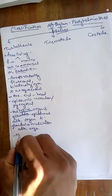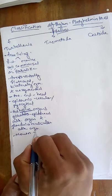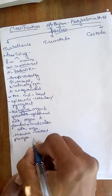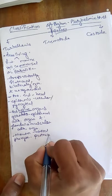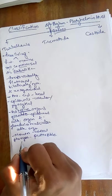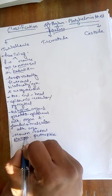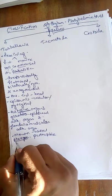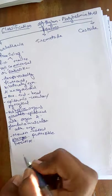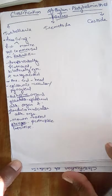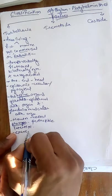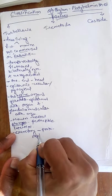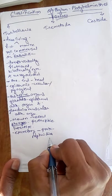The mouth is ventral in position and the pharynx is protrusible. The intestine is present and shows variation. The excretory organs are present in the form of protonephridia, which act as excretory organs.